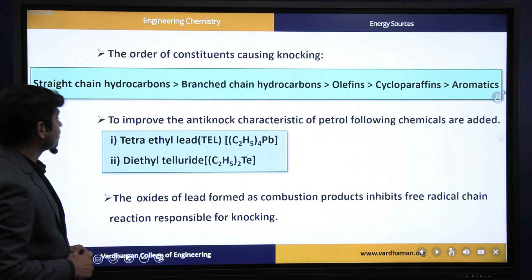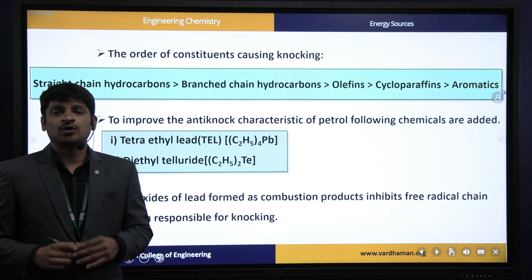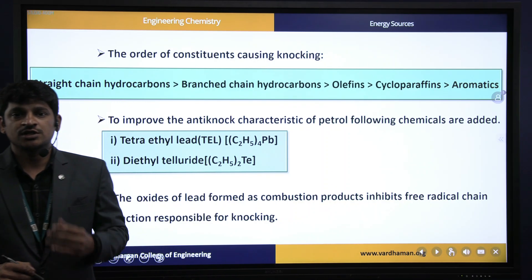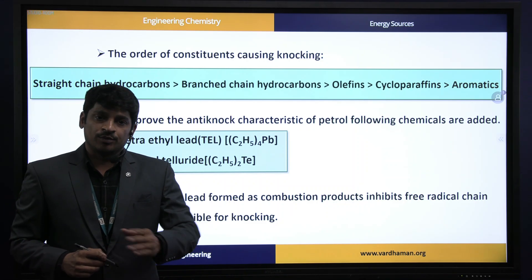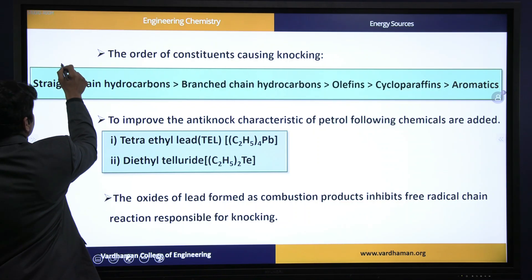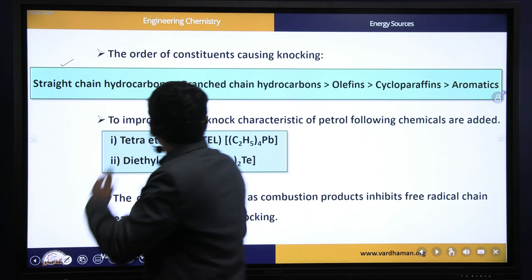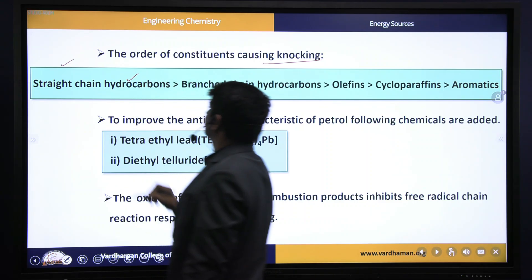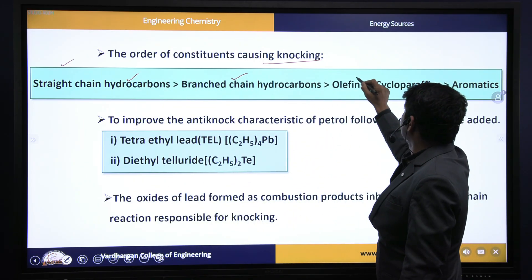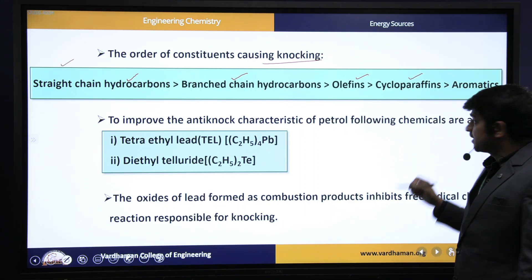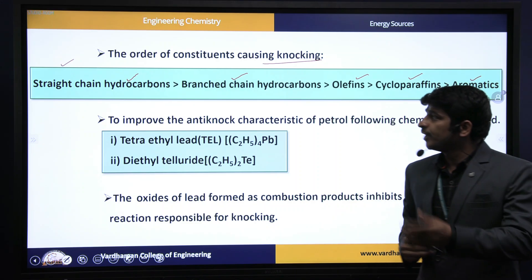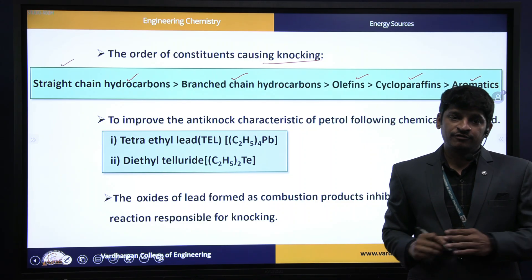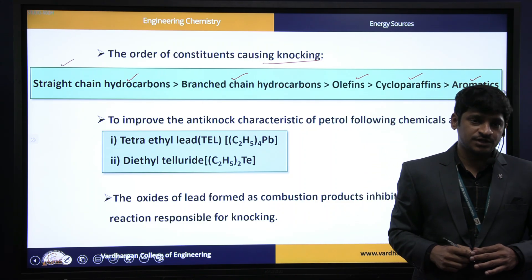The elements responsible for knocking in petrol — whose chain length ranges from C5 to C9 — include straight-chain hydrocarbons, branched-chain hydrocarbons, olefins, cycloparaffins, and aromatics. The order of constituents causing knocking is: straight-chain hydrocarbons cause maximum knocking, followed by branched-chain hydrocarbons, then olefins, then cycloparaffins, and lastly aromatics. If a petrol sample has a maximum percentage of straight-chain hydrocarbons, it is a poor quality petrol.